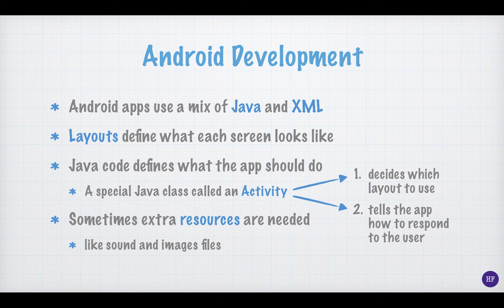Now that we've seen the architecture of the Android platform, let's look at what is involved in Android development. Android development uses a mix of both Java and XML files, so you should be comfortable with both of these languages before starting. In Android development, everything centers around the screen. The screen has a particular layout, and also contains view elements like text areas and buttons. The layout essentially dictates how those view elements will fit together.